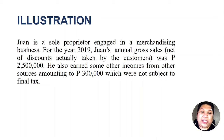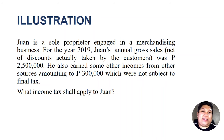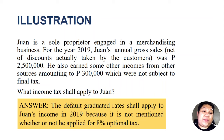Here's an illustration. Juan is a sole proprietor engaged in a merchandising business for 2019. Juan's annual gross sales net of discounts actually taken by customers was ₱2,500,000. He also earns other incomes from other sources amounting to ₱300,000 pesos which were not subject to final tax. Therefore, Juan's annual gross sales plus other non-operating income is only ₱2.8 million — Juan is qualified to choose the 8% optional rate. For 2019, the default graduated rates will apply to Juan's income because it is not mentioned in the problem whether he elected the 8% optional rate.